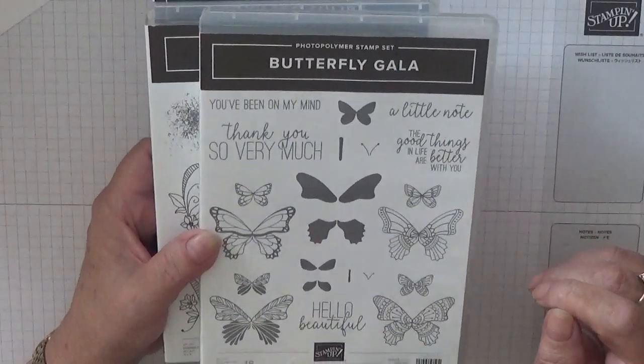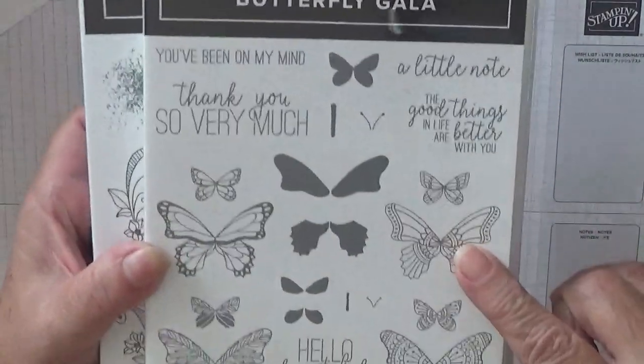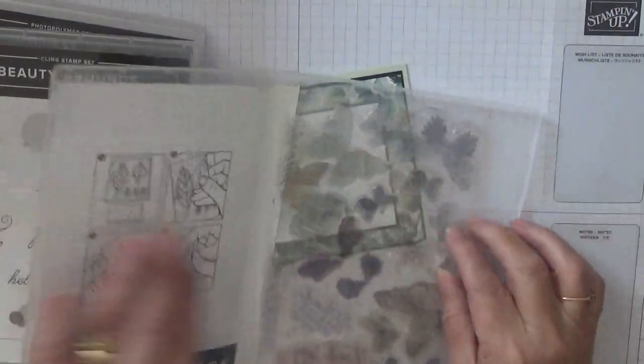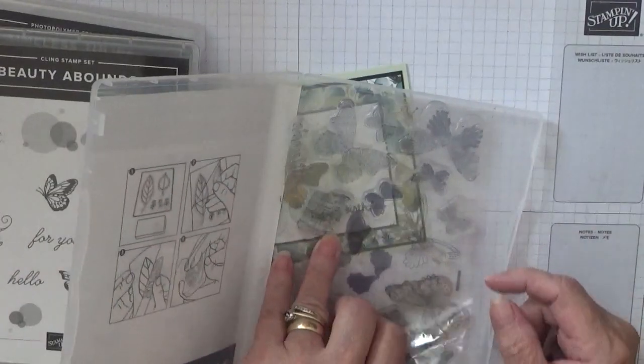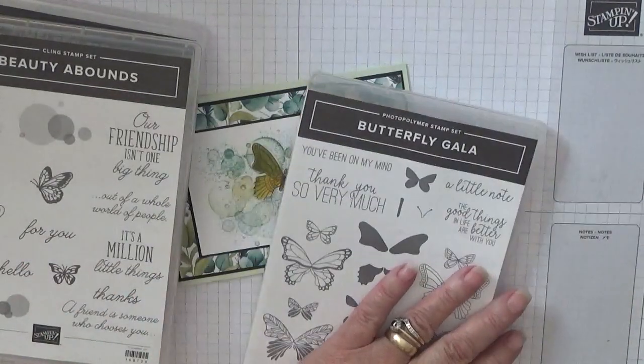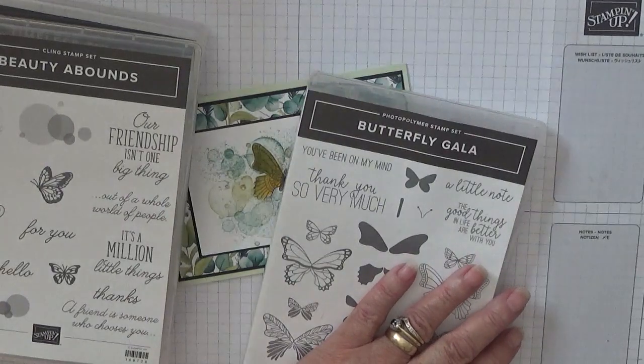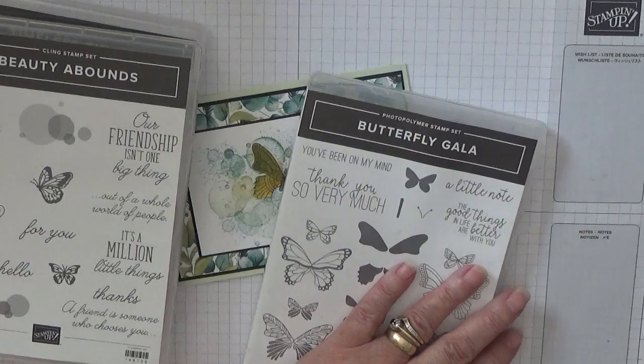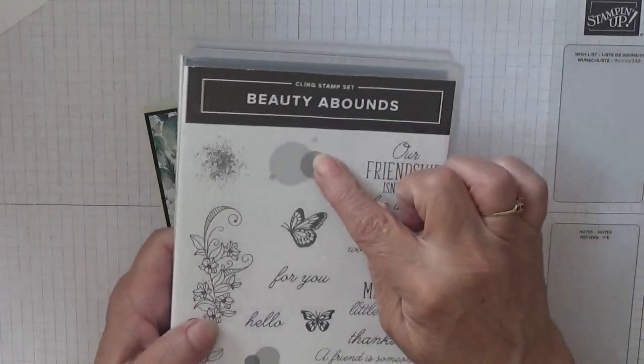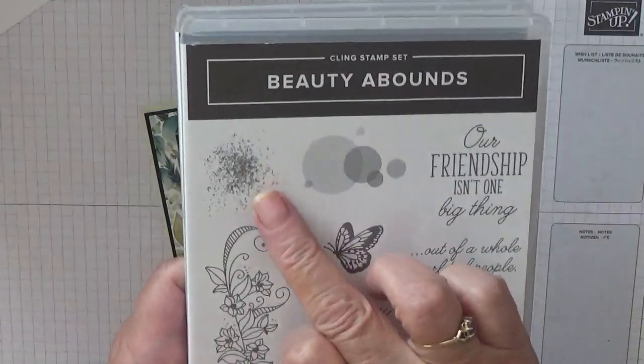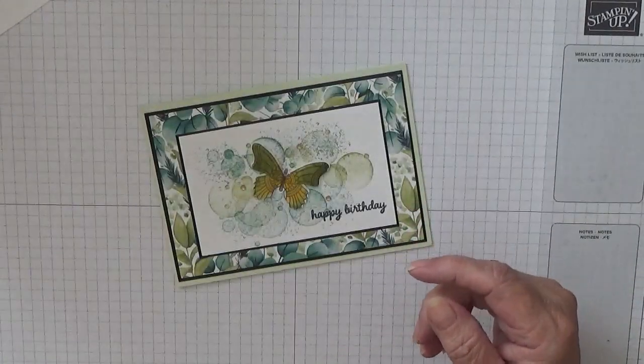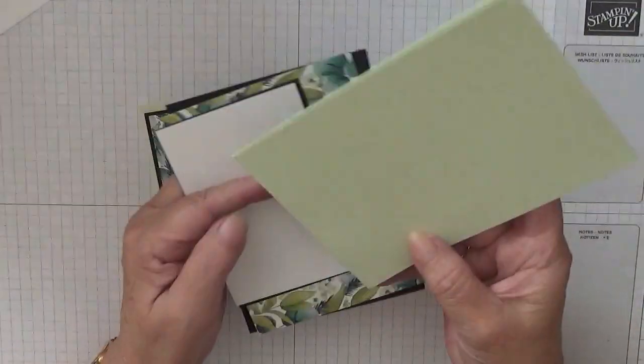I'm going to be using that butterfly and the two-colored ones. I'll keep that to one side. I'm also going to be using Beauty Abound for the two dots and the splatters, and Timeless Tulips just for happy birthday.